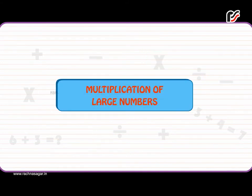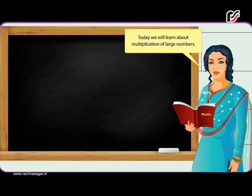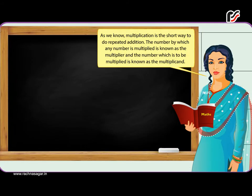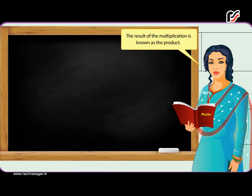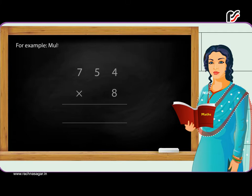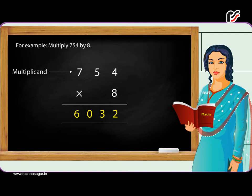Multiplication of Large Numbers: Today we will learn about multiplication of large numbers. As we know, multiplication is the short way to do repeated addition. The number by which any number is multiplied is known as the multiplier, and the number which is to be multiplied is known as the multiplicand. The result of the multiplication is known as the product. For example, multiply 754 by 8. Here, 754 is the multiplicand, 8 is the multiplier, and 6,032 is the product.